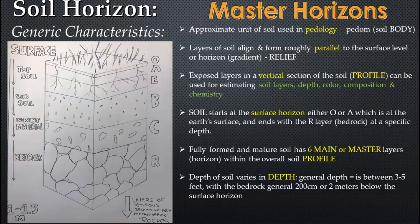So a master horizon — first, a horizon is a layer, an exposed layer of soil underground. You have your surface, wherever that may be and whatever landscape that may be, and beneath the surface you have these layers of soil. You go down to a certain depth, usually between three to five feet — about one and a half meters — and you generally reach solid rock, which is called the bedrock or the R horizon. Each of these layers has subdivisions and different characteristics within them.